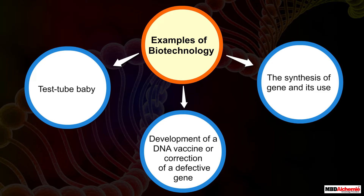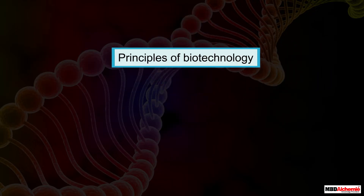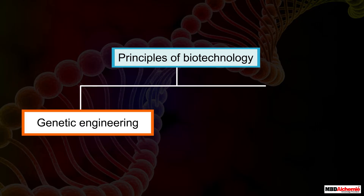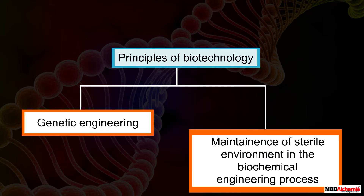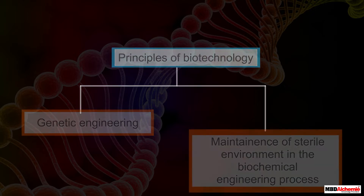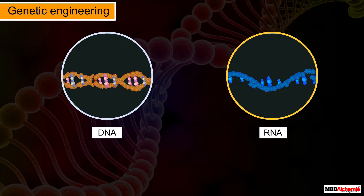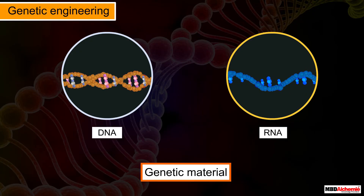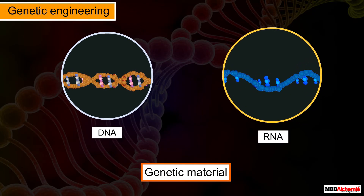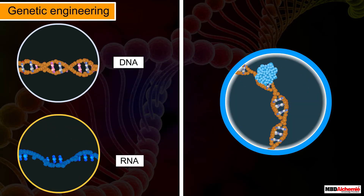All of these can be considered as examples of biotechnology. Biotechnology works on certain principles. It mainly works on two core principles: genetic engineering, also known as recombinant DNA technology, and maintenance of a sterile environment in the biochemical engineering process. Genetic engineering, as the name suggests, involves working with the genetic material — DNA and RNA — of an organism to bring about changes in it.